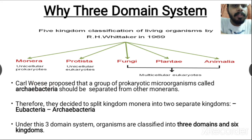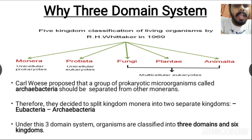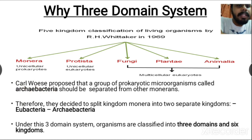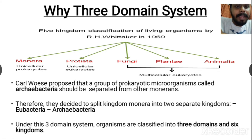Karl Woese proposed that a group of prokaryotic microorganisms — the Archaebacteria — should be separated from other Monerans. Although Archaebacteria and Bacteria are both unicellular prokaryotes placed in the Monera kingdom, Woese argued that Archaebacteria do not share many characteristics with other bacteria and are unique, so they should be placed in a different new kingdom.